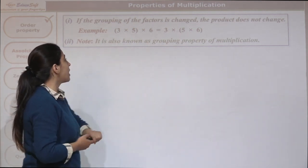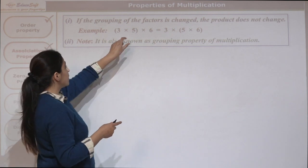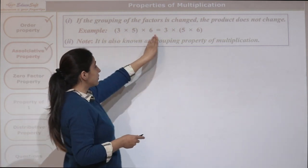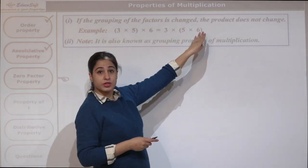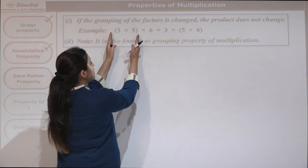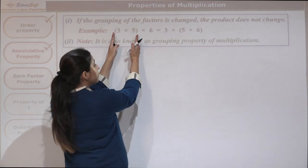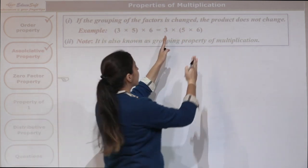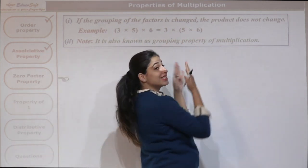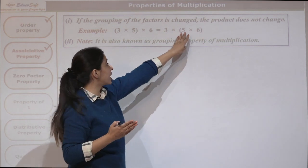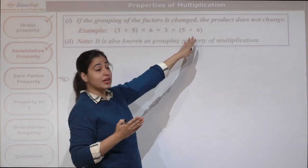Here we have 3, 5, and 6 on both sides. Here we have grouped the first two numbers, and here we have grouped the second and the third number.